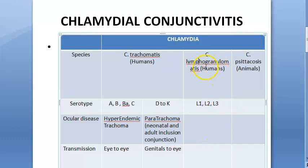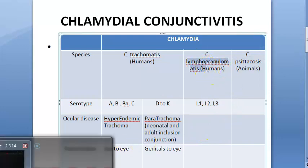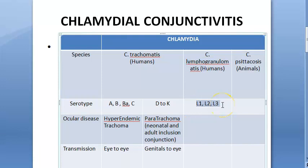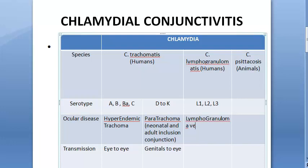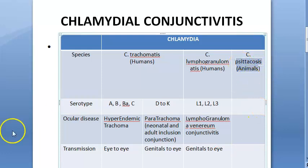As for Chlamydia lymphogranulomatis in humans, the L1, L2, L3 serotypes cause lymphogranuloma venereum conjunctivitis — another type of conjunctivitis. This also spreads from genitals to eye. There is another Chlamydia species that causes disease in animals, but we are not going into details of that.